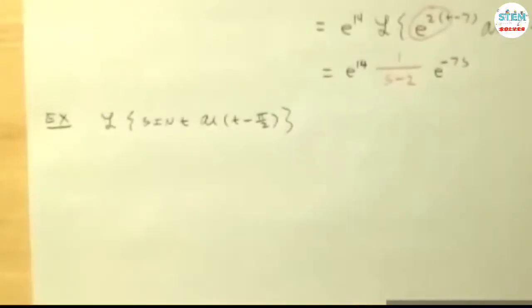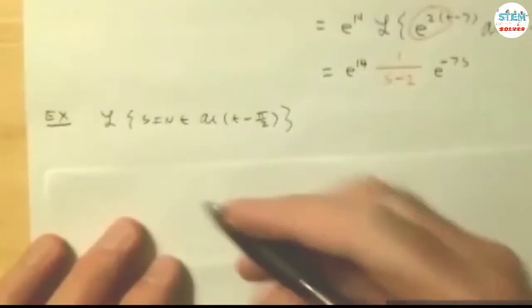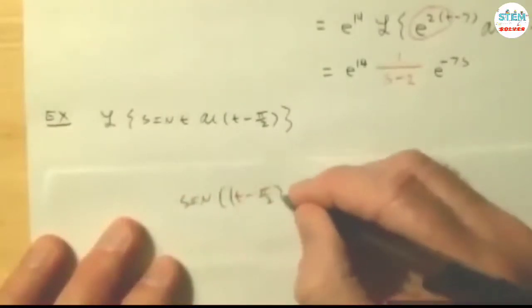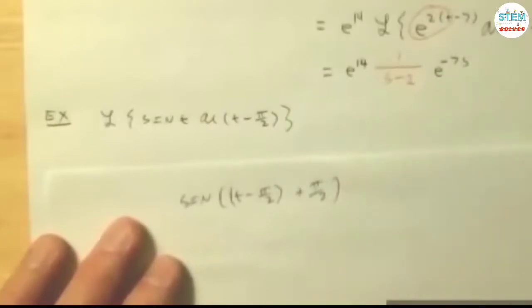I could do the same thing later then. I could say the sine of t minus pi over 2 plus pi over 2. But then I'd have to use the addition formula for sine, which isn't bad. But there's an easier way of doing it if you just kind of think about it.